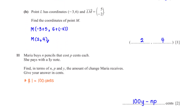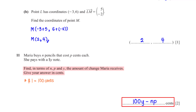Maria buys n pencils that cost p cents each. She pays with a y-dollar note. Find, in terms of n, p, and y, the amount of change Maria receives in cents. The change equals the amount she pays, converted to cents as 100y, minus the amount she spends on pencils which is n×p. So the answer is 100y − np.